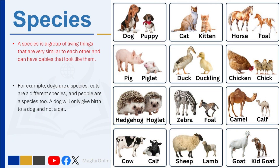A species is a group of living things that are very similar to each other and can have babies that look like them. For example, dogs are a species, cats are a different species, and people are a species too. A dog will only give birth to a dog and not a cat. It's the same with plants — you can only get maize seed from a maize plant; you cannot get rice seeds from it.